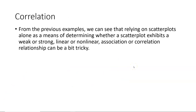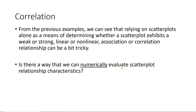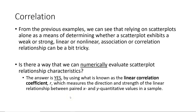From the previous examples, you probably saw that relying on scatterplots alone to determine whether a relationship is weak or strong, linear or nonlinear, can be a bit tricky. So the question comes up: is there a way to numerically evaluate scatterplot relationship characteristics? The answer is yes. We use what is known as the linear correlation coefficient, R, which measures the direction and strength of the linear relationship between paired x and y quantitative values in a sample.